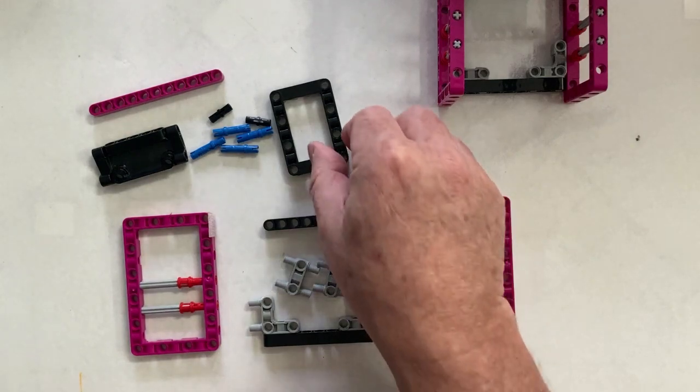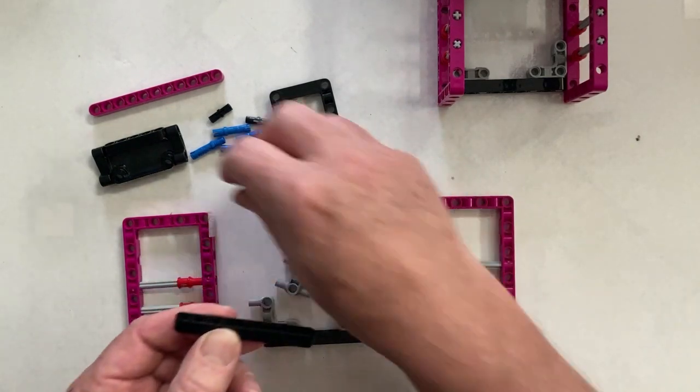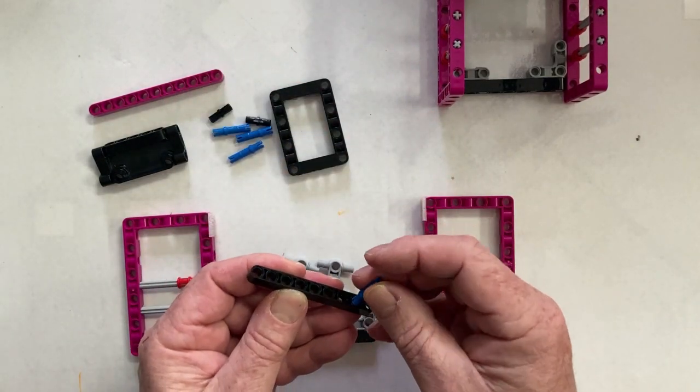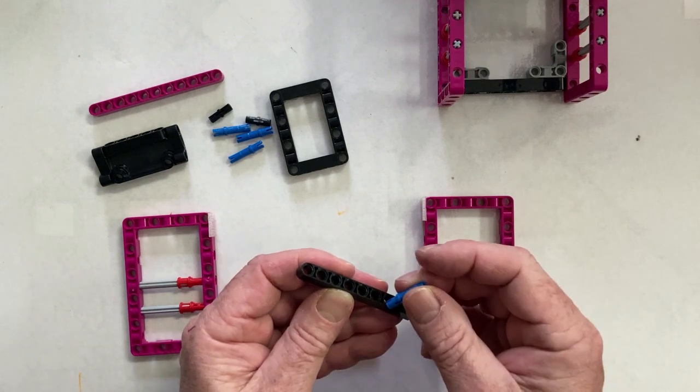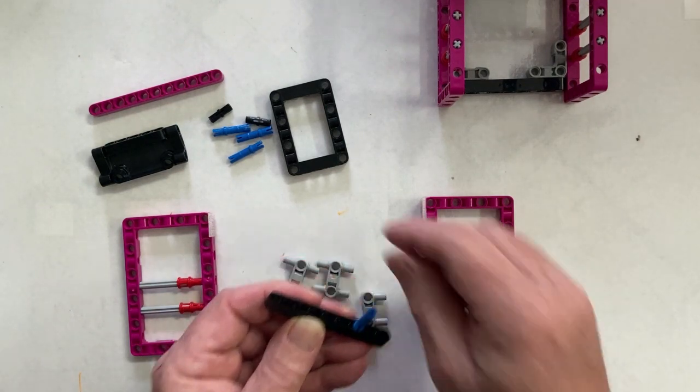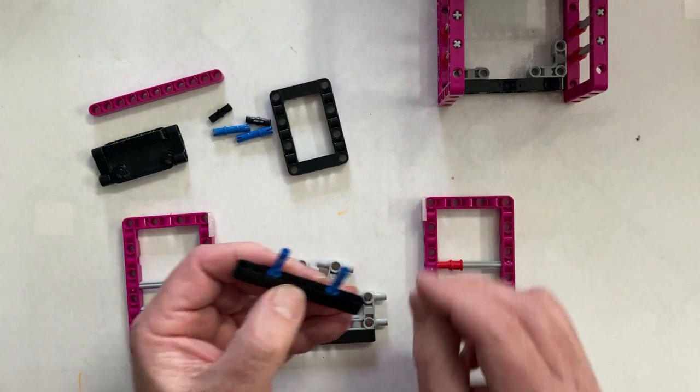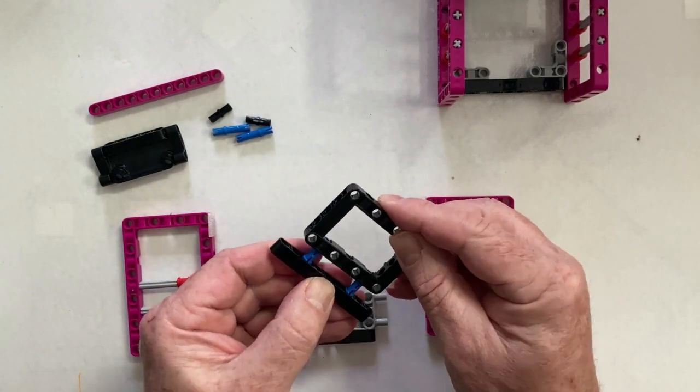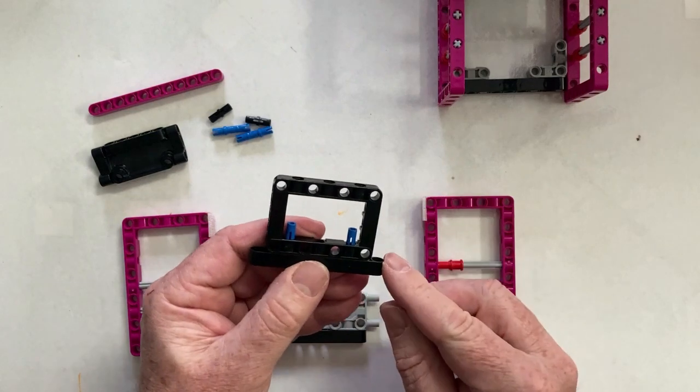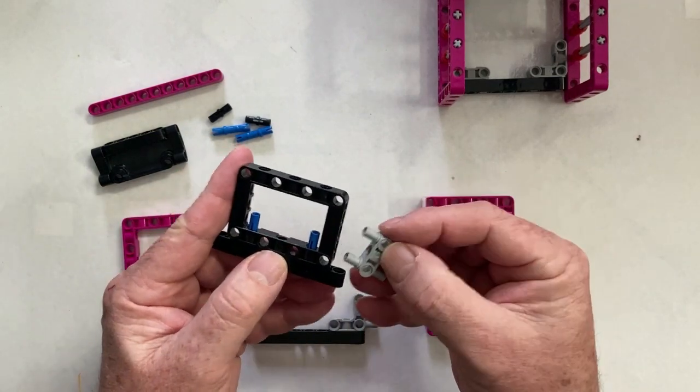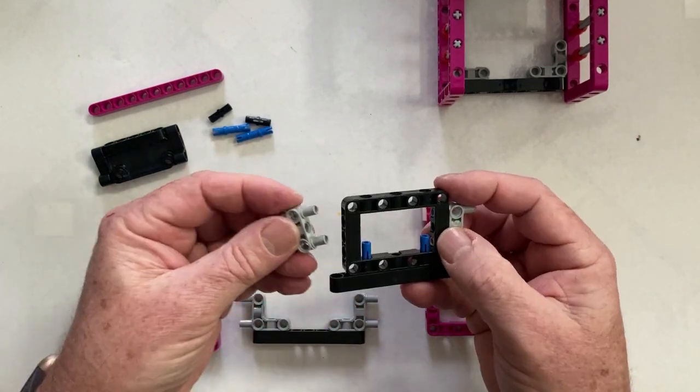Then we take the back section. We put two of the blue pegs in at the top so that we can attach the cover. Then we place the side pieces on.